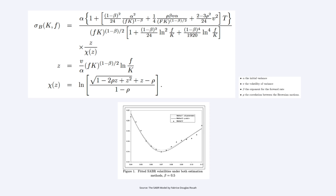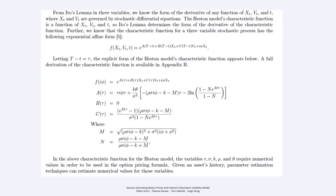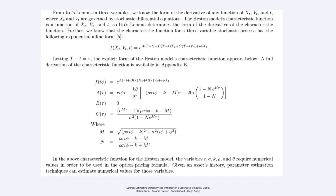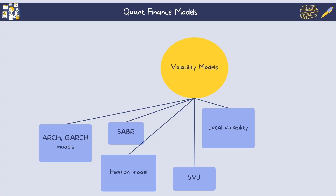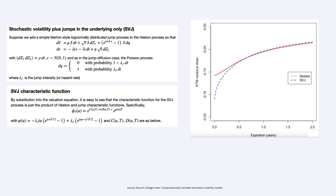The SABR model models the forward rate with stochastic volatility, incorporating parameters alpha for volatility, beta for elasticity, and rho for correlation. The Heston model is a stochastic volatility model used for option pricing, assuming that volatility follows a mean-reverting square root process. It accounts for the observed volatility smile in markets by allowing volatility to be random and correlated with asset returns.